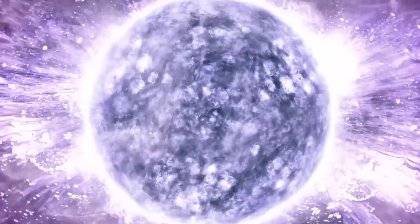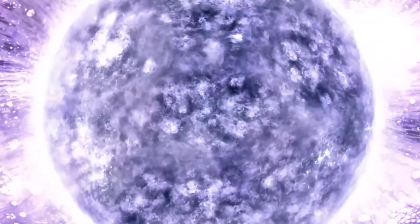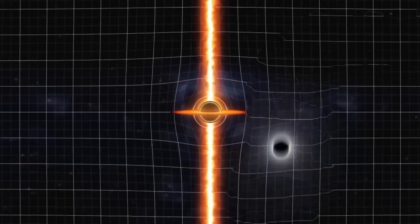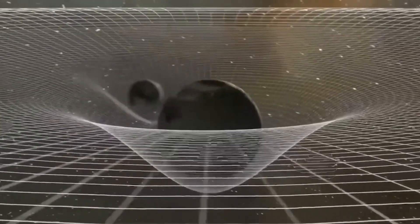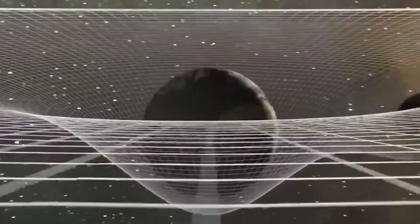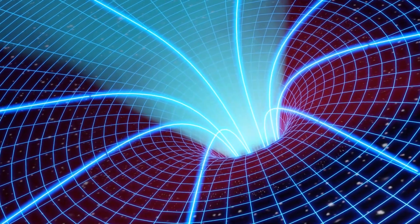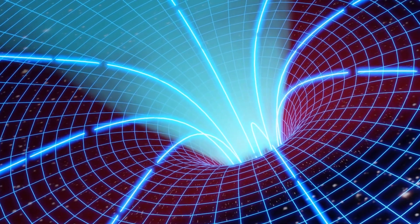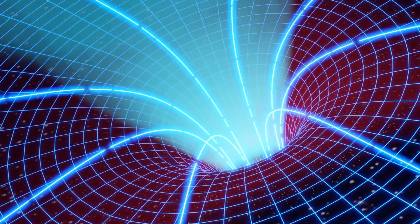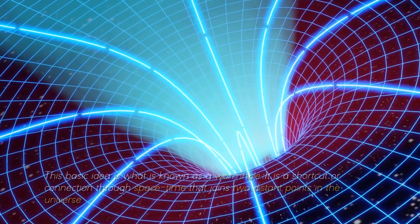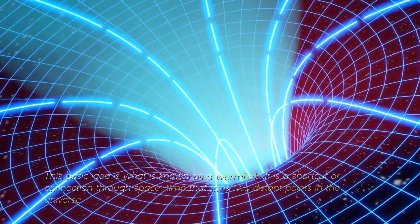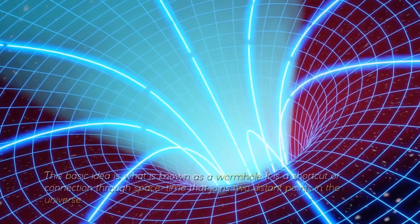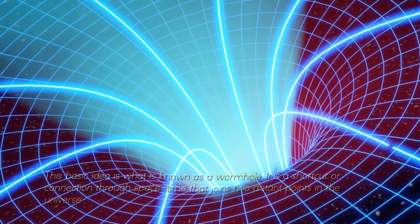To visualize this, we can imagine a sheet of paper representing space-time. If we place two points on the paper and draw a line between them, we are representing how objects move through space-time. Now, let's consider folding the paper in half and creating a shortcut between those two points. This basic idea is what is known as a wormhole. It is a shortcut or connection through space-time that joins two distant points in the universe.